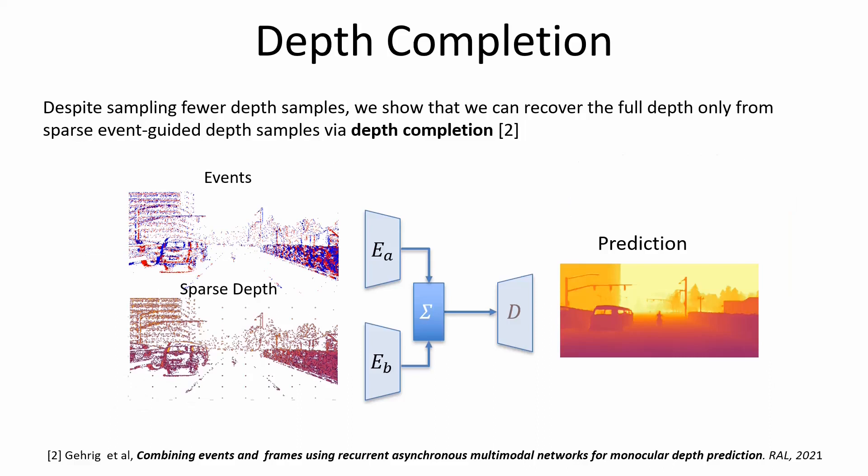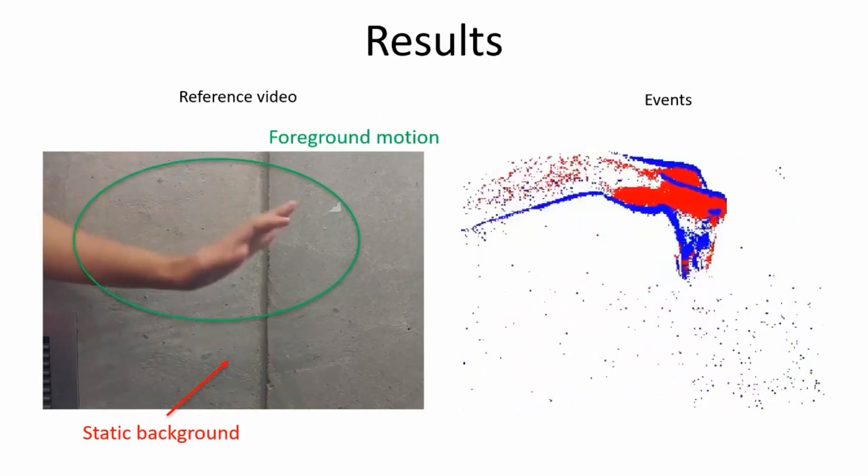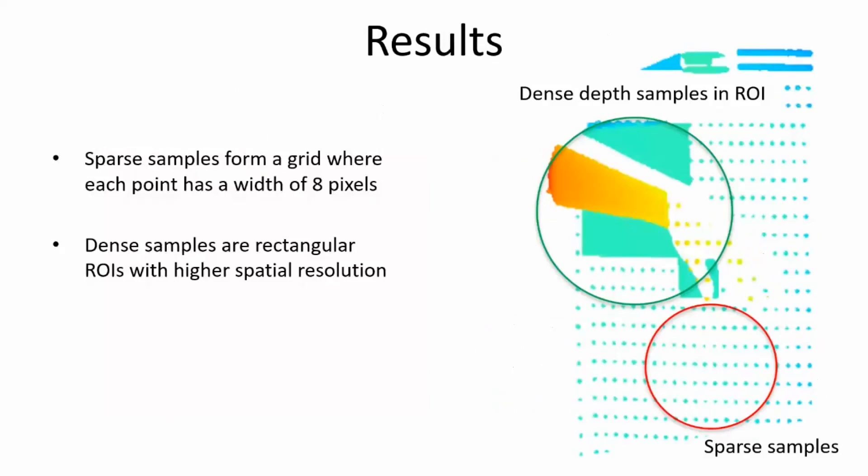We now show some results of event-guided depth sensing with our prototype depth sensor. In this scene, we have motion in the foreground due to the movement of the hand, whereas the background remains static. The events correspond to the motion of the hand. We see that our approach results in sparse depth samples in the static areas and dense depth in the dynamic areas.